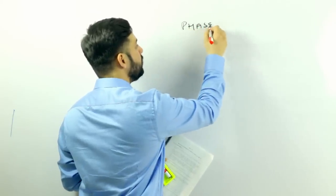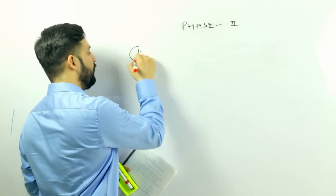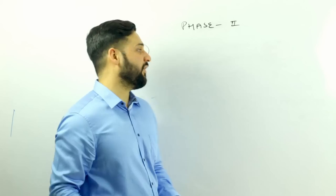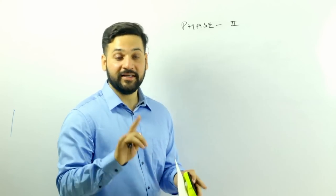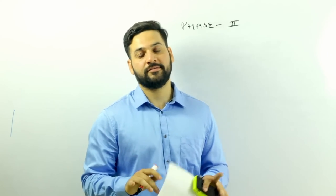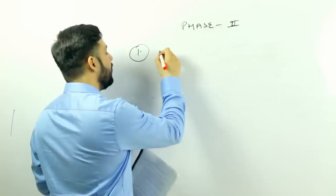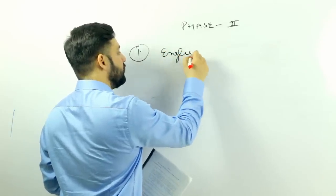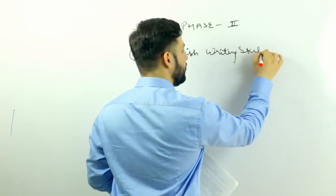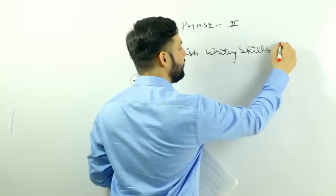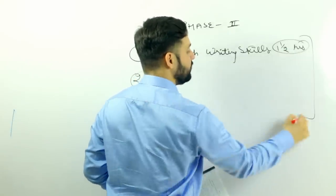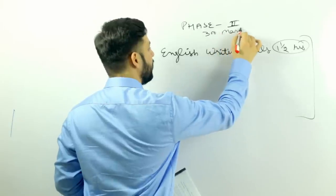In phase two, there are three papers. The first paper is English writing skills - 90 minutes, one and a half hours. All papers are online exams, you need to type. The most important point for those who are going to appear for phase two exam - you need to have a good typing speed, you need to type your answers. There is English, not normal English, it is a descriptive paper - English writing skills. It will be one and a half hour and there will be 100 marks for each paper, 300 marks allotted total.